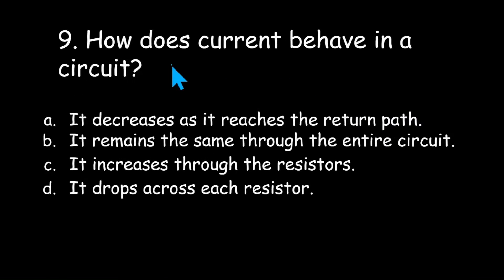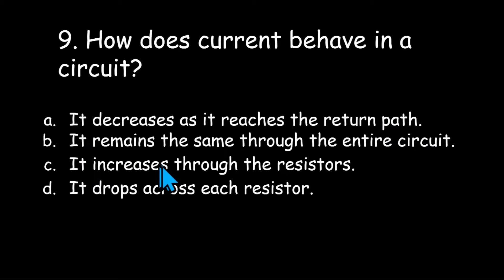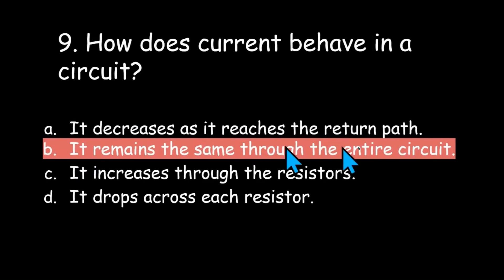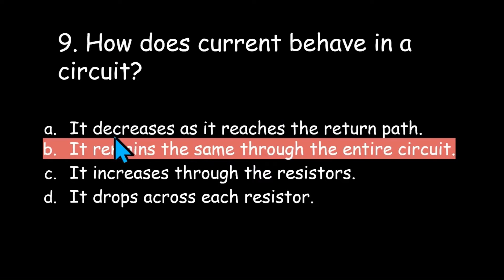Number nine: how does current behave in a circuit? It decreases as it reaches the return path, it remains the same through the entire circuit, it increases through the resistors, or it drops across each resistor? The answer is B: it remains the same through the entire circuit. Current is the same going into a circuit as it is coming out of the circuit, as long as there are no parallel elements that split it up.